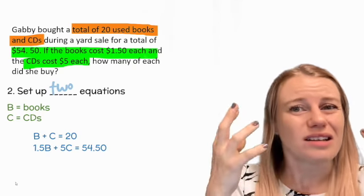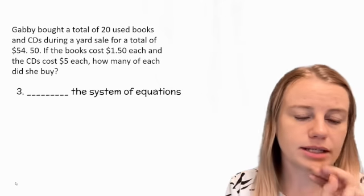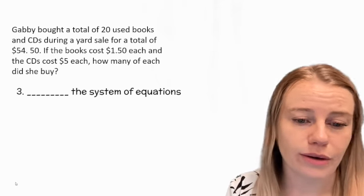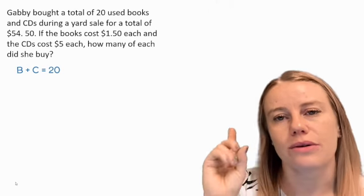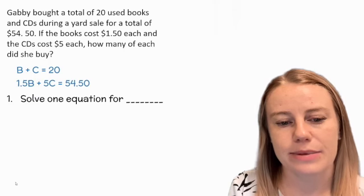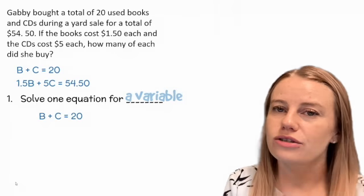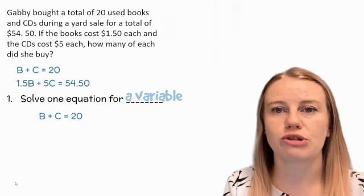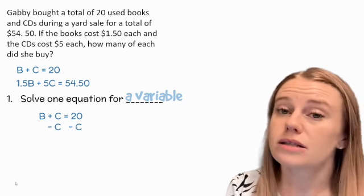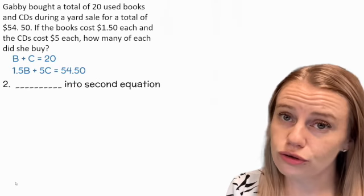Step three, we are going to solve these systems. We're solving one equation for a variable. I chose the first one because it's the easiest—we don't have to divide anything. All we have to do is subtract one of these variables. So let's subtract the C and solve for B: B equals 20 minus C.